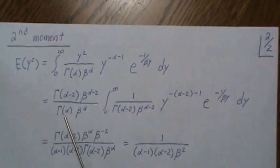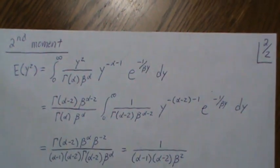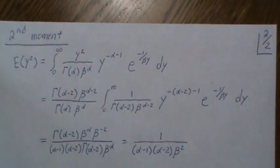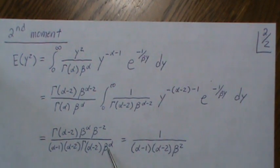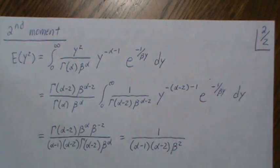And then notice this is alpha minus 1 times alpha minus 2 times gamma of alpha minus 2. And so we get a cancellation there, and the beta alpha cancels, and we're left with this.